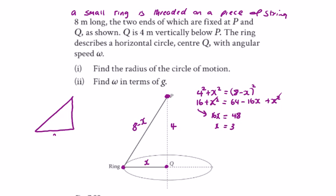So my triangle now has a radius of three, we have four, and we have five. We have an angle if we need it. Let's look at the forces. We're looking for ω in terms of g.